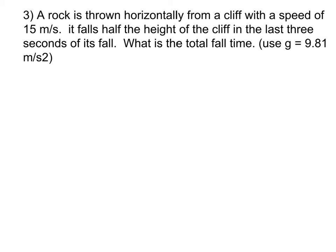So to understand this problem I'm going to first draw it out the best I can, but let's read it. A rock is thrown horizontally from a cliff with a speed of 15 meters per second. It falls half the height of the cliff in the last three seconds of its fall. What is the total fall time?